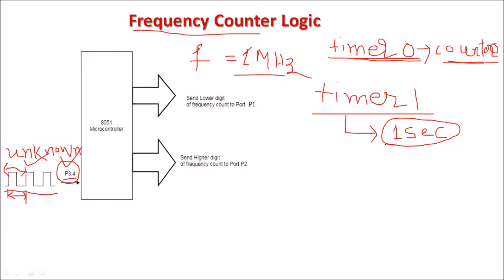For this 1-second delay we will start the counter. For that 1-second delay, this counter will count the unknown clock cycles. Suppose the number of unknown cycles counted in 1 second is N.